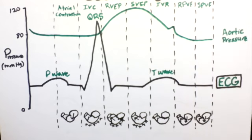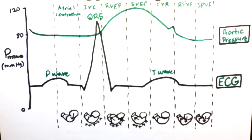The first wave we're going to take a look at is called the aortic pressure wave. The pressure of the aorta is 80 mmHg until the rapid ventricular ejection phase, when the semilunar valve opens and blood from the ventricle rushes into the aorta, increasing the pressure up to 120 mmHg. This pressure remains until the semilunar valve closes during the isovolumetric relaxation phase and the pressure returns back to 80 mmHg.